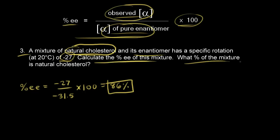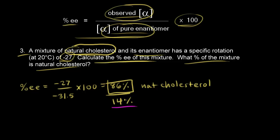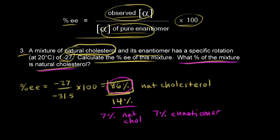Our next question is: what percentage of the mixture is natural cholesterol? The 86% enantiomeric excess represents 86% of natural cholesterol. The remaining 14% must be a racemic mixture. Since a racemic mixture is half and half, that means 7% is natural cholesterol and 7% is the enantiomer. So the total percentage of natural cholesterol is 86 plus 7, which equals 93%.